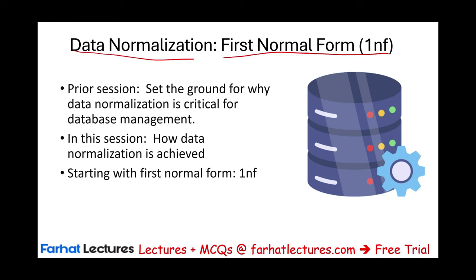Bear in mind that in order to achieve 2NF, you have to achieve 1NF first. In order to achieve the third normal form, you have to achieve the first and the second. So it's very important to look at these steps in sequence: first, second, then third. When we go to the second normal form, we assume the first one has been achieved, because you cannot achieve 2NF if there's any violation of the first normal form.